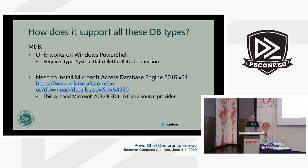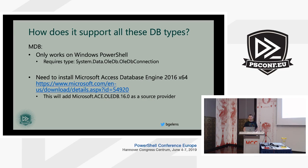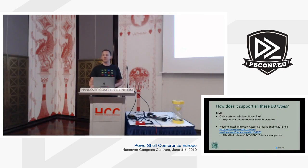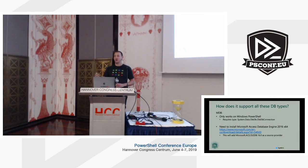So how does it support all these database types? There are some caveats depending on the database type, the OS you're running, and the PowerShell version. MDB only works on Windows PowerShell — not PowerShell Core — because it requires a type that's not available in Core. It uses an OleDB connection type, and an additional installation is needed: the Access Database Engine 64-bit version, because we don't want you dropping to 32-bit PowerShell just to access Access databases.